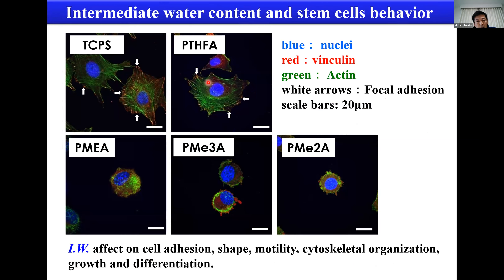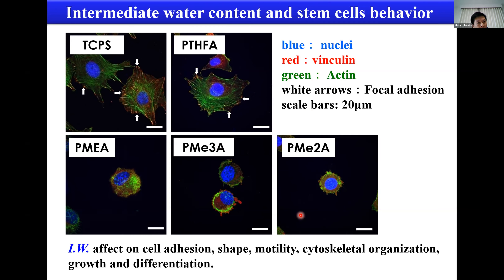Finally, we observe stem cell behavior in the field of tissue engineering and regenerative medicine. Intermediate water content affects stem cell behavior. Using PTHFA, PMEA, PME3, and 2A — polymers with different intermediate water contents — we observed that intermediate water content of hydrated polymers affects cell adhesion shape, number, motility, cytoskeletal organization (actin formation), cell growth, proliferation, and differentiation of stem cells, using very safe and inexpensive synthetic polymers without any biopolymers or proteins.